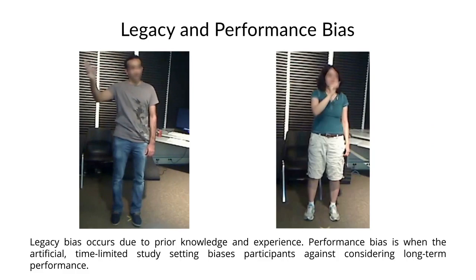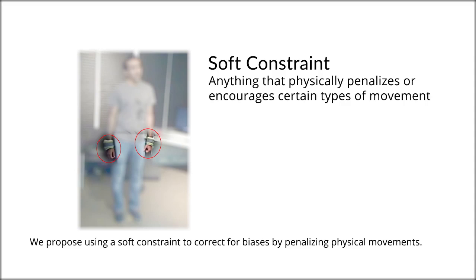We propose using a soft constraint to correct for biases by penalizing physical movements. We show soft constraints encourage a wide range of gestures using similar arm movements or alternative body parts.